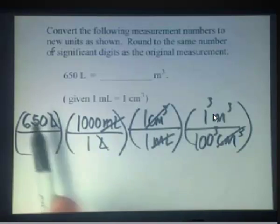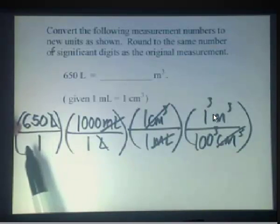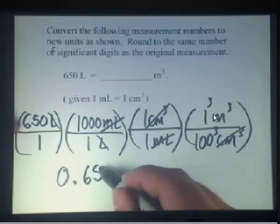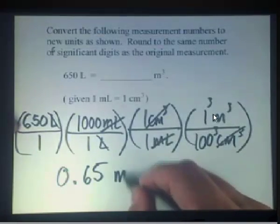So now in this case we'll multiply straight across the top, multiply straight across the bottom, come up with a value like 0.65, and in this case using our label of cubic meters.